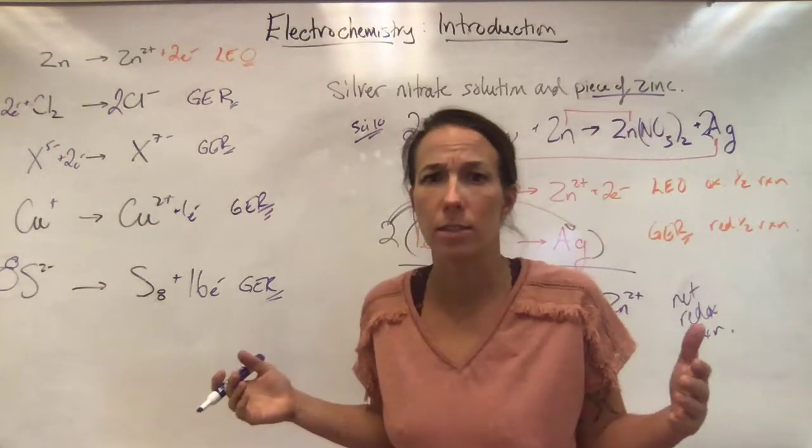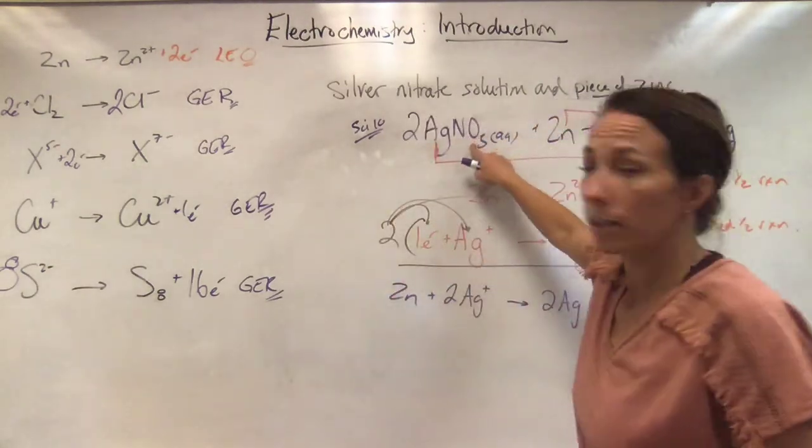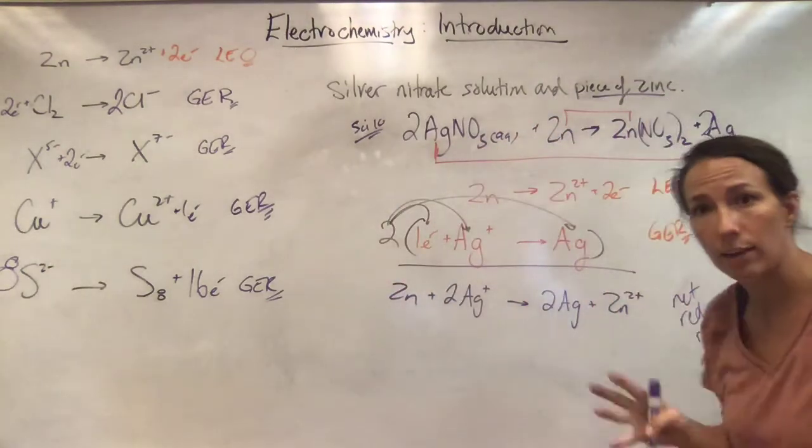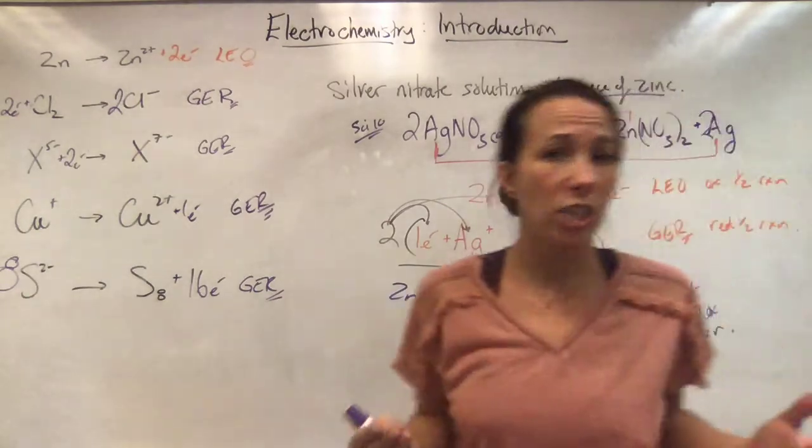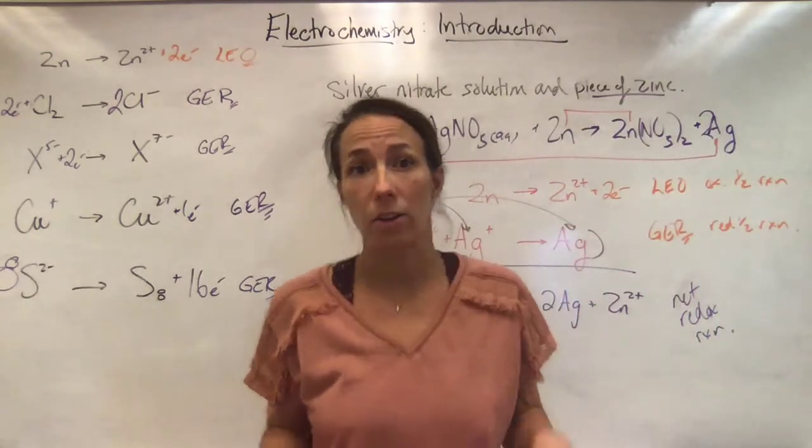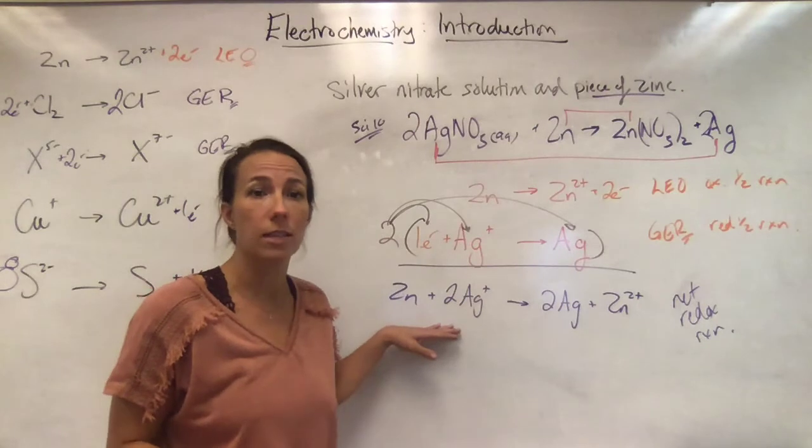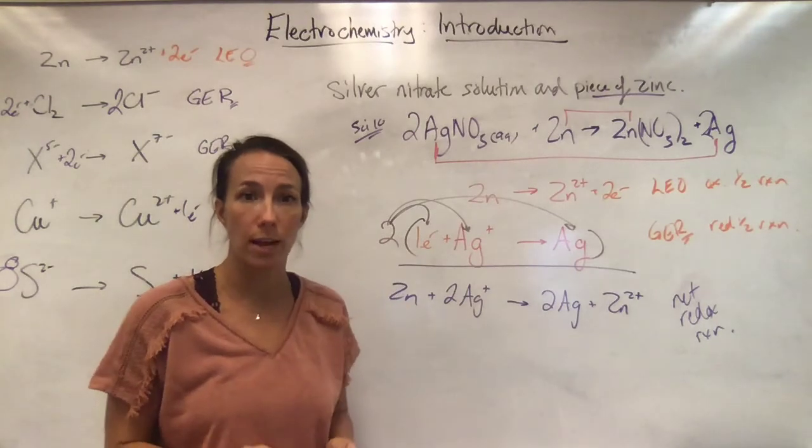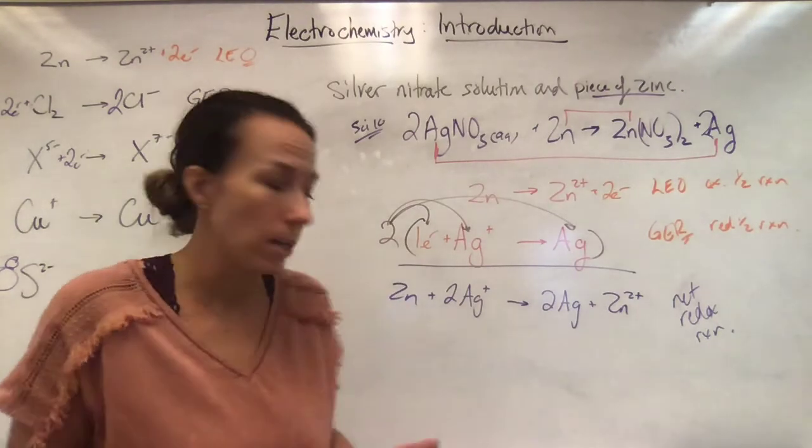What happened in the NO3 minuses? Well, they didn't change. Here and here, still NO3 minuses. An unchanged ion is called a spectator ion. So we've removed the spectator ions, and we're left with a net redox reaction, just like we did in CHEM20.